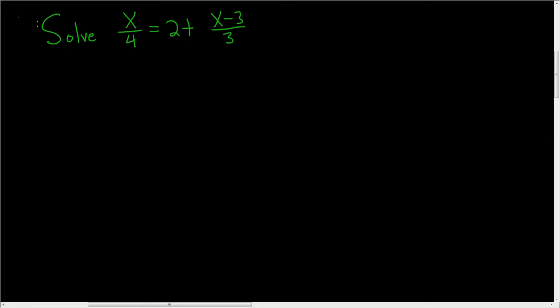This equation has fractions, and a good first step is to get rid of the fractions. If we multiply both sides by what's called the least common denominator, the fractions will go away.